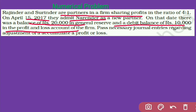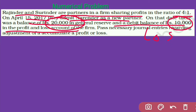In this question, Rajinder and Surrender are old partners with profit sharing ratio of 4:1, and Narender is admitted as a new partner. At the date of admission, there is a general reserve balance of 20,000 in the firm, and 10,000 is the debit balance of the P&L account. A debit balance means it is a loss. If shown in balance sheet format, it would be on the asset side. Now we need to pass journal entries, so first let's make the entry for general reserve.